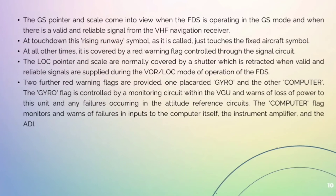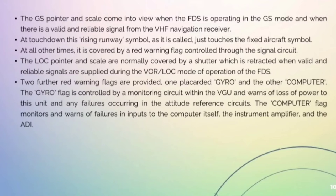At all other times, the rising runway symbol is covered by a red warning flag controlled through the circuit signal. The LOC pointer and scale are normally covered by a shutter which is retracted when valid and reliable signals are supplied during the VOR/LOC mode of operation of the FDS. Two further red flag warnings are provided: one for gyro and one for computer. The gyro flag is controlled by a monitoring circuit within the VGU and warns of the loss of power to this unit and any failures occurring in the attitude reference circuit. The computer flag warns of failures in inputs to the computer itself, the instrument amplifier, and the ADI.